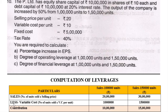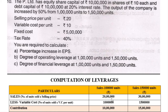Now deduct variable cost. Variable cost equals number of units sold multiplied by variable cost per unit. Case 1: 1 lakh units into rupees 10 gives rupees 10 lakh. Case 2: 1 lakh 50,000 units into rupees 10 gives rupees 15 lakh. Therefore, contribution: 20 lakh minus 10 lakh equals rupees 10 lakh; and 30 lakh minus 15 lakh equals rupees 15 lakh in the second case.